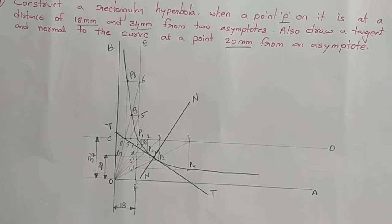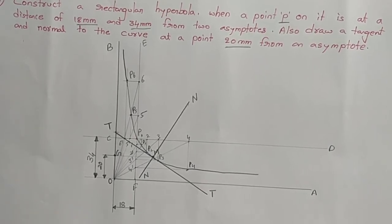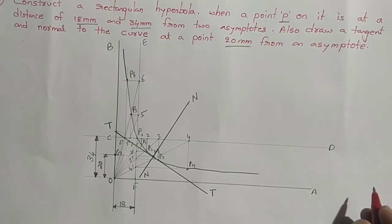Now we have completed the required curve using the asymptote method. It is known as rectangular hyperbola.